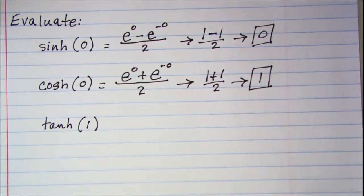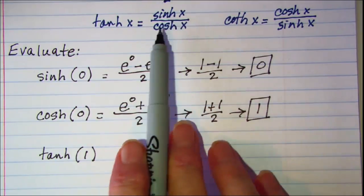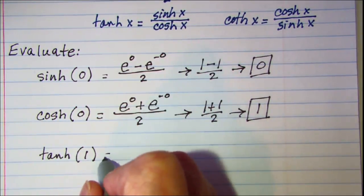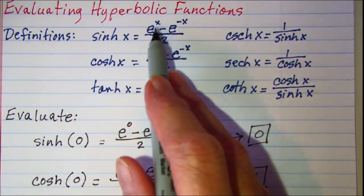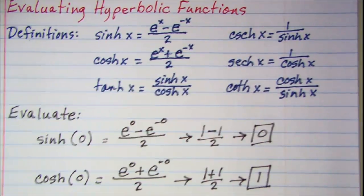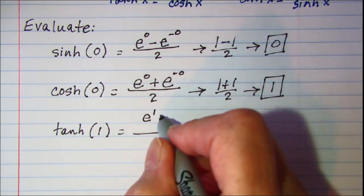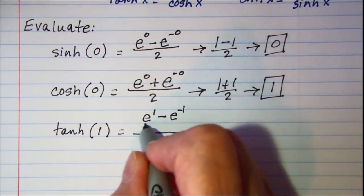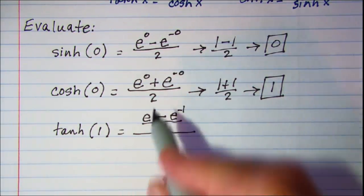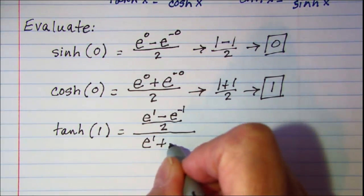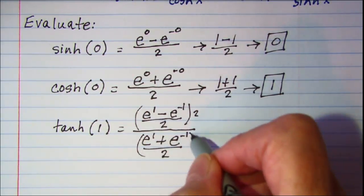Finally, let's evaluate the hyperbolic tangent of 1. By definition, that's the hyperbolic sine of x divided by the hyperbolic cosine of x. The hyperbolic sine of 1 is e to the 1 minus e to the negative 1, divided by 2. The denominator is the hyperbolic cosine of 1, which is e to the 1 plus e to the negative 1 divided by 2. We can multiply top and bottom by 2 to simplify this complex fraction.